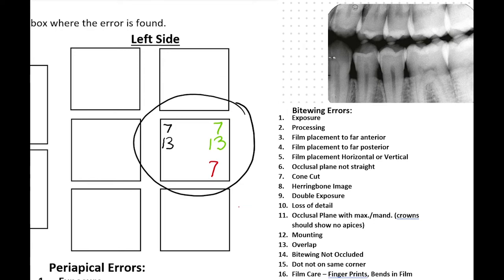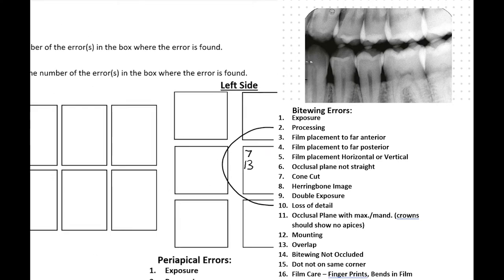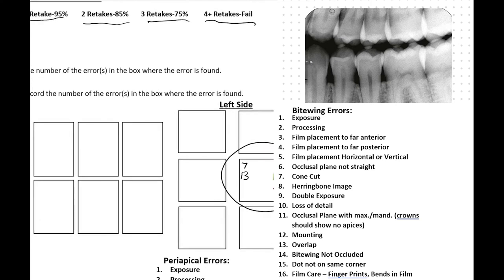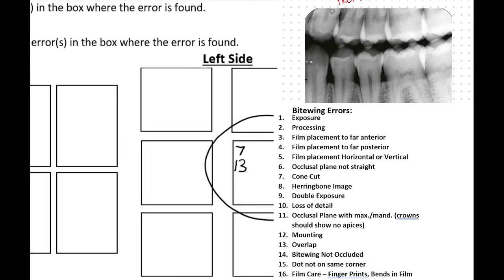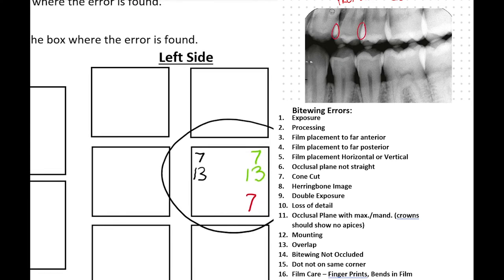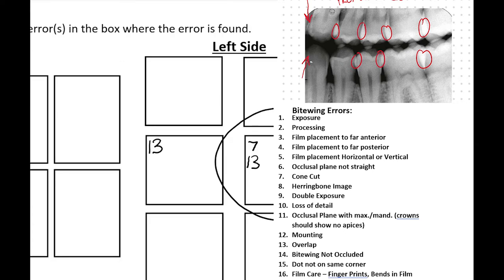This next x-ray is another bitewing, but it looks like it's a little bit further forward. What are the errors that you can see in this one? As a student, I'm going to write down that there is a bunch of overlap, so I'm going to notate that one as a 13. What else can we find? I can see that we can see almost the full cuspid or the full coronal structure of the canine, and we don't need all that. Maybe for this shot, your film placement was too far anterior and it needs to come back a little bit, just enough so that we can see the distal of the canine but not all the way to the mesial side. So let's add a three.